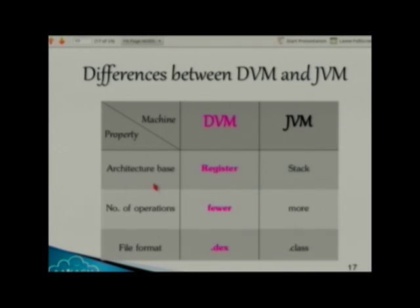Going back to the slide — the point is now clear: the number of operations in DVM is fewer because it is register-based, and for JVM the number of instructions is more because it is stack-based.